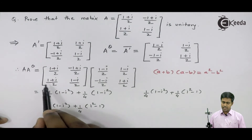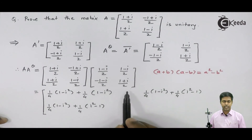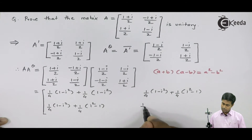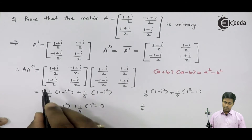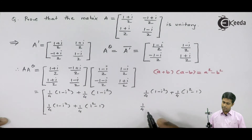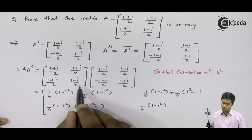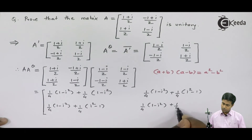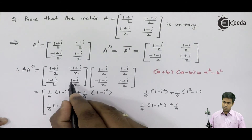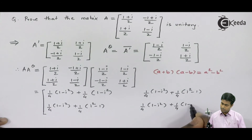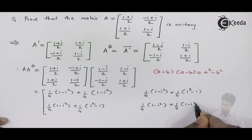Now let us multiply the second row with the second column. We get 1/4, and (1+i)(1-i) = 1 - i². For the last term, 1/4, and (1-i)(1+i) again gives 1 - i².